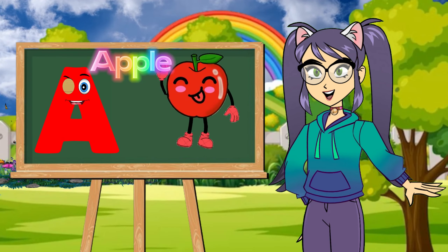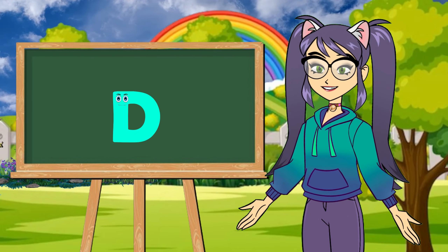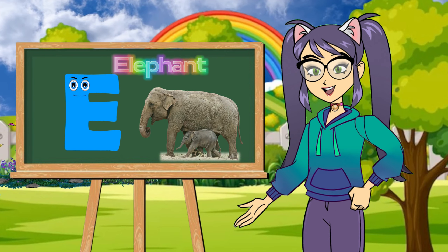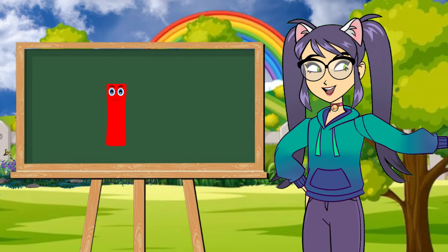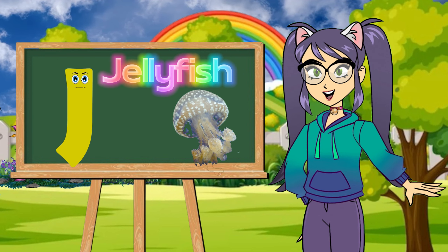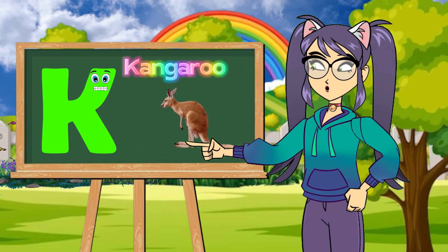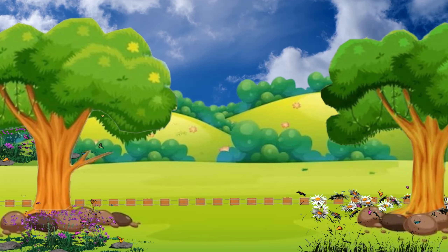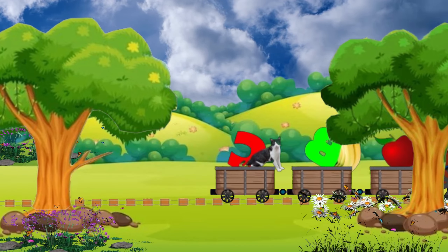A is for apple. A, A, apple. B is for ball. B, B, ball. C is for cat. K, K, cat. D is for dog. D, D, dog. E is for elephant. N, elephant. F is for fish. F, F, fish. G is for giraffe. K, giraffe. H is for hat. K, hat. I is for igloo. E, E, igloo. J is for jellyfish. J, J, jellyfish. K is for kangaroo. K, K, kangaroo. L is for lion. L, L, lion.